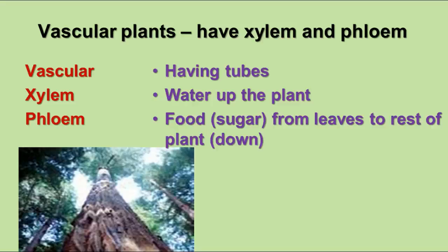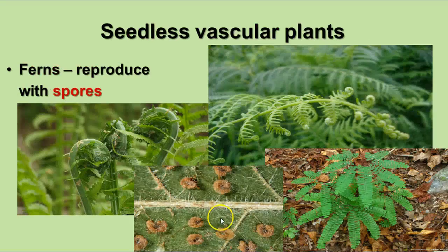The first group of vascular plants is the seedless vascular plants. The most recognizable group is the ferns. There are also other groups called horsetails and club mosses, but ferns are most common.